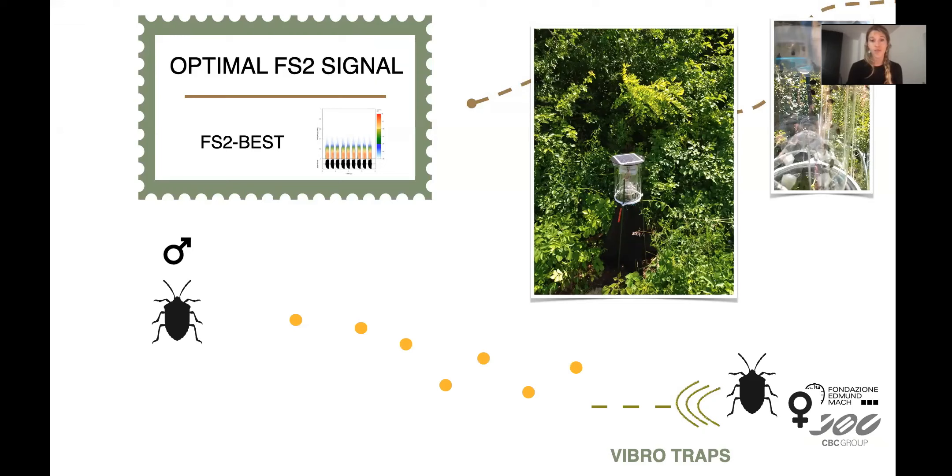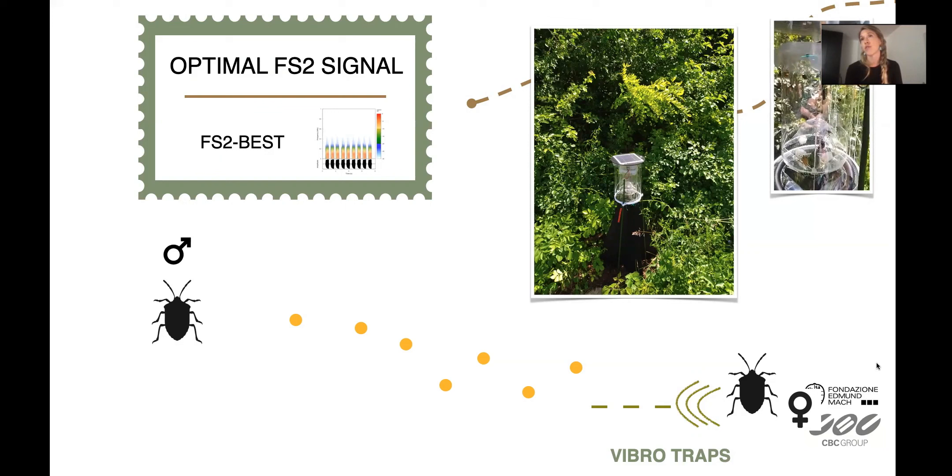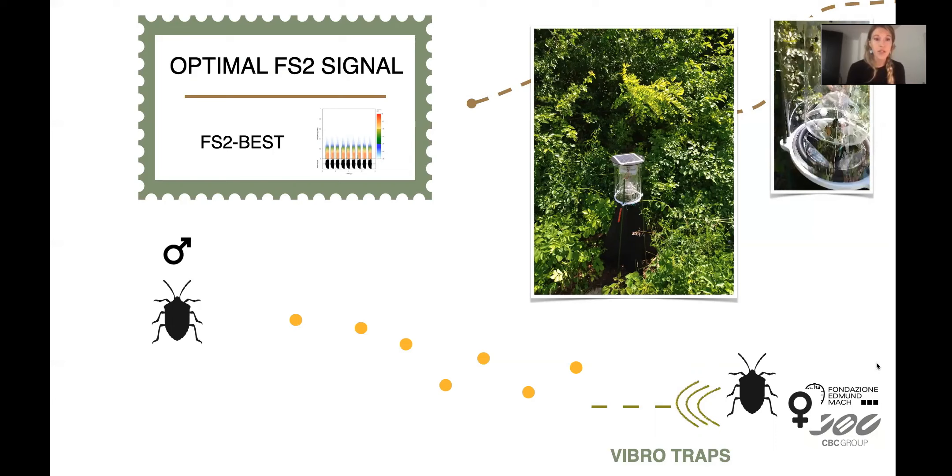This took the application of this signal to the next step, which was inside the vibrotrap. These vibrotraps have been improved in the past seasons, and this new version of them has arrived this week to FEM. Here you can see in the video the insects moving inside the vibrotraps. These vibrotraps are combining the long distance attraction with pheromones with the short distance attraction to inside the trap using the FS2 optimal signal developed. We checked the traps today and it was really cool to see how well they're working and how different they were from the traps without the vibrations.